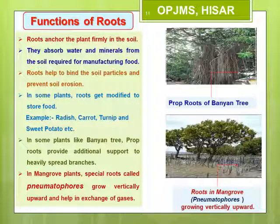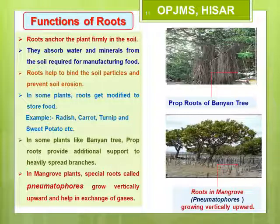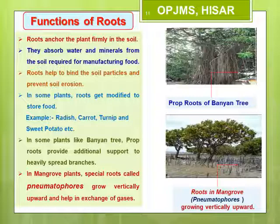Roots also help in preventing soil erosion by binding the soil particles together. Roots of some plants are modified to perform additional functions. The first modification is for storage of food: in plants like carrot, turnip, radish, sweet potato, and beetroot, the roots are swollen due to storage of food — these are known as storage roots. In plants like the banyan tree, rope-like growths hang down from the bigger branches; these are known as prop roots.